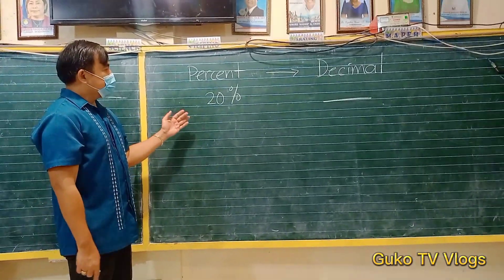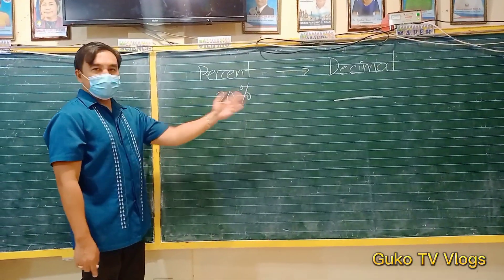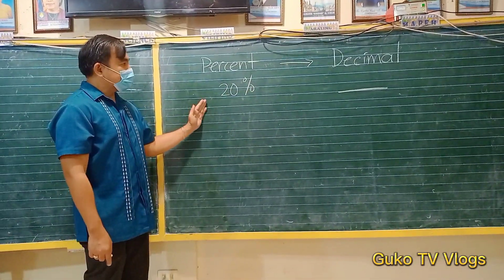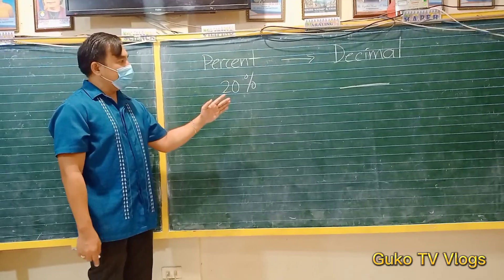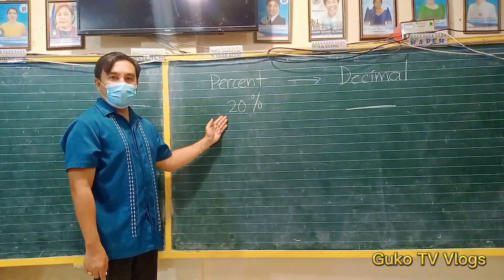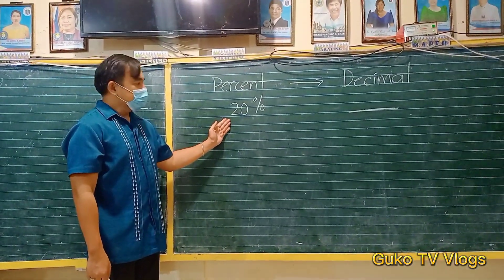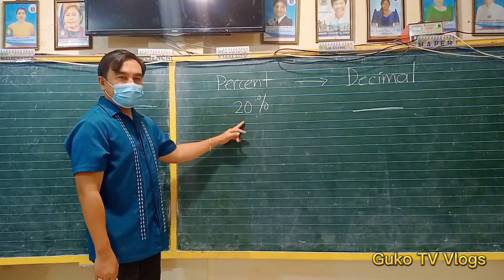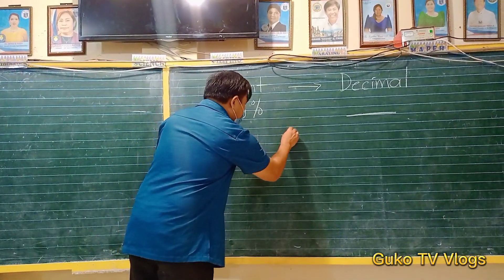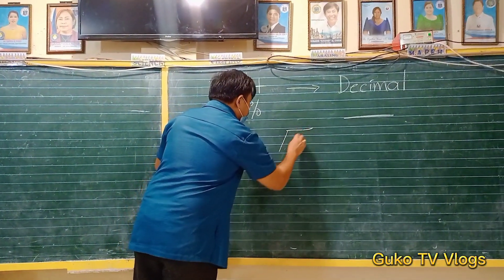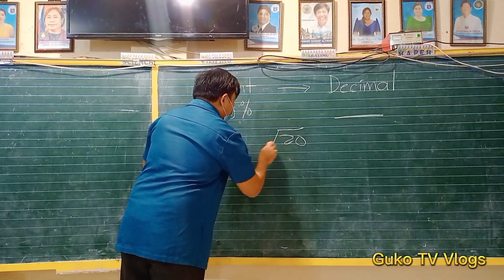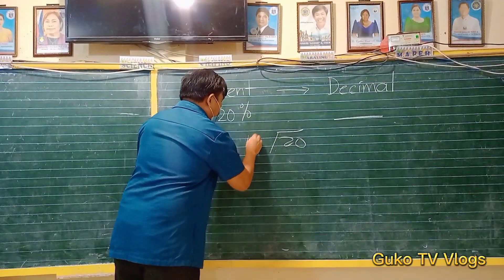How to change percent to decimal? We can change percent to decimal by dividing it by 100. So we have 20 percent. We must take 20 and divide it by 100.